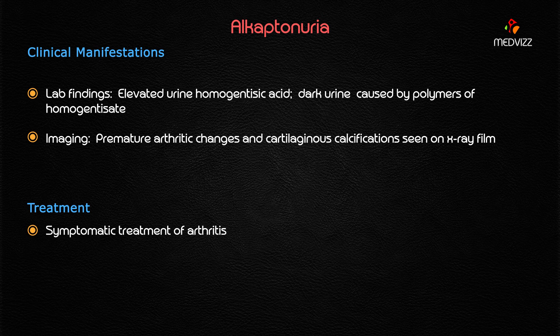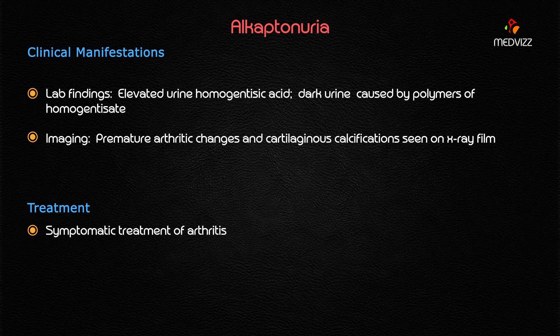Lab findings are most evident with elevated urine levels of homogentisic acid, causing dark urine due to polymers of homogentisic acid. X-ray films show premature arthritic changes and cartilaginous calcifications. Symptomatic treatment is the only available option in this case.